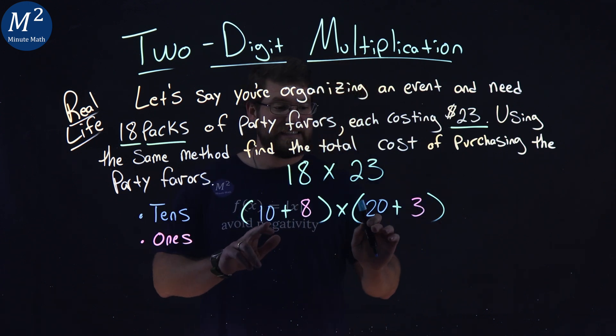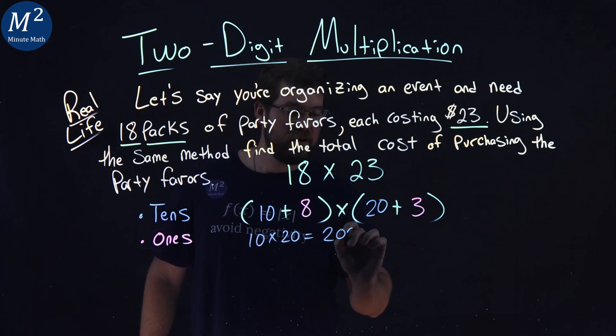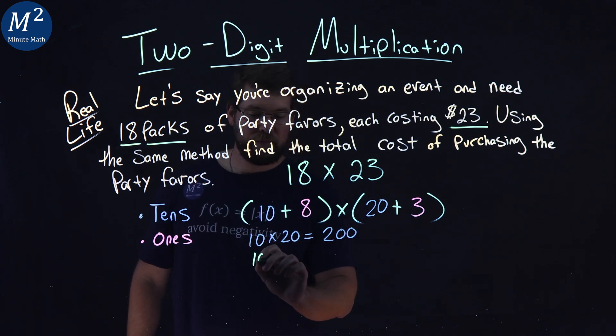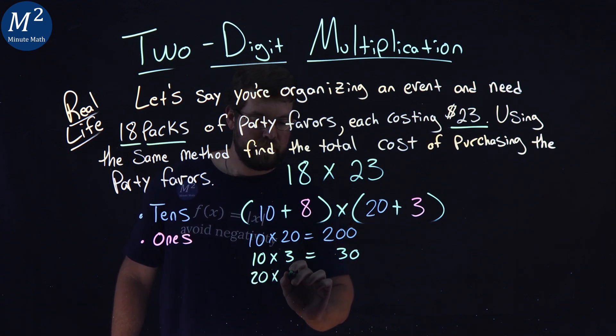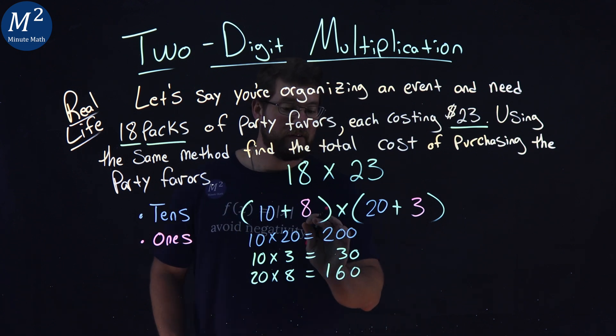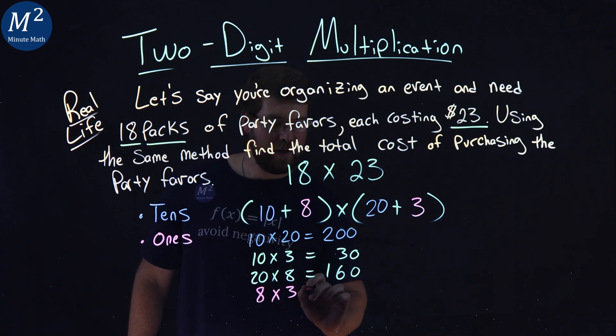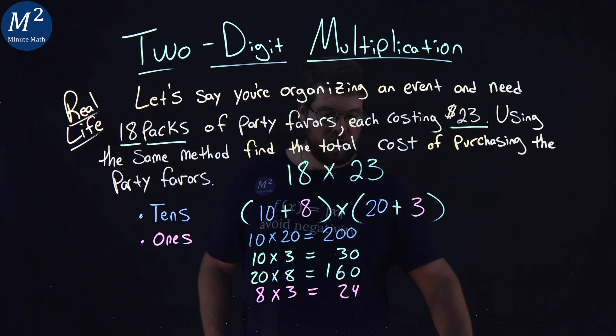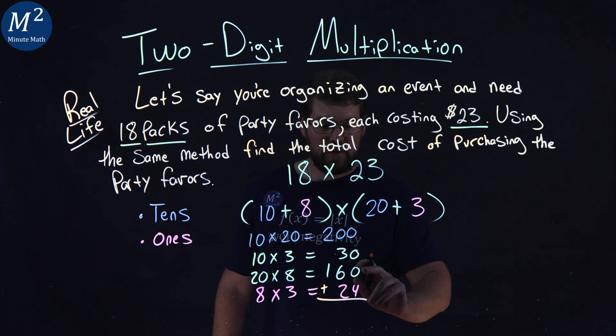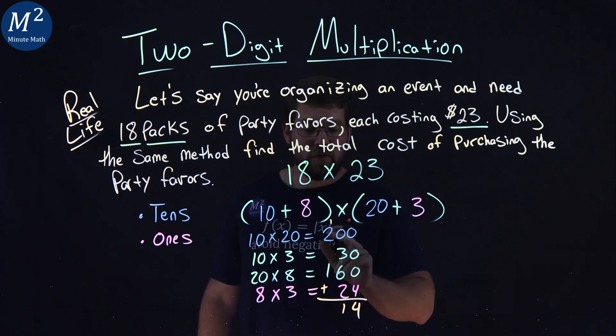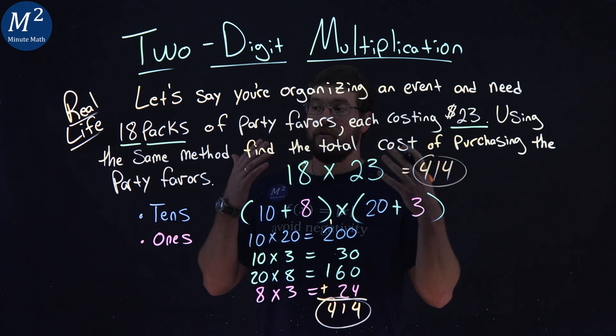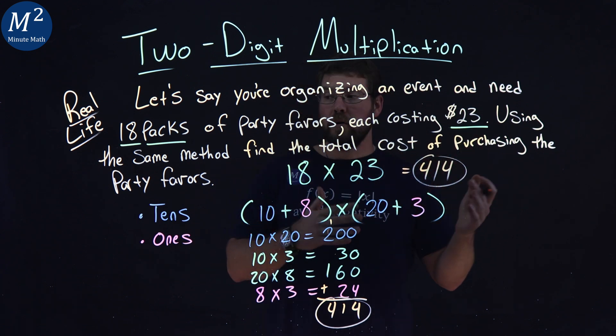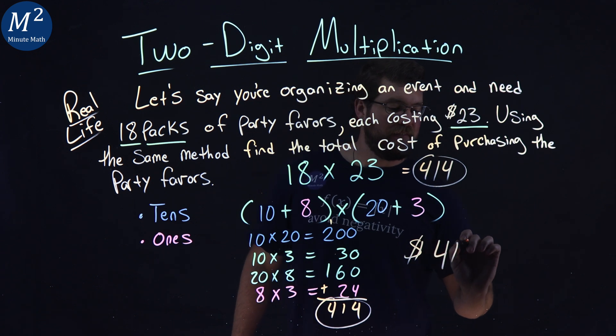Now, let's multiply the tens together. 10 times 20 is 200. 10 times 3 is 30. 20 times the 8 here, 20 times 8 is 160. And 8 times 3 is 24. We now want to add up our numbers that we found. 0, 0, 0, 4 is 4. 0 plus 3 is 3, plus 6 is 9, plus 2 is 11. We have 1, carry the 1, and 1 plus 2 plus 1 is 4. And so, 18 times 23 is 414. So, in the context of this problem, the total cost of purchasing the party favors is $414.